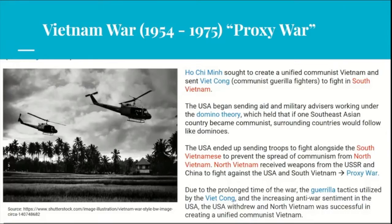Ho Chi Minh sought to create a unified communist Vietnam and sent the Viet Cong - communist guerrilla fighters - to fight in South Vietnam. The US policy of containment and the domino theory dictated that the USA begin sending aid and military advisors, then troops, to fight alongside South Vietnam to prevent the spread of communism. North Vietnam received weapons from the USSR and China, making it a proxy war. Due to prolonged fighting, guerrilla tactics, and increased anti-war sentiment in the USA, the US withdrew and North Vietnam succeeded in creating a unified communist Vietnam.